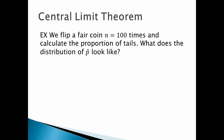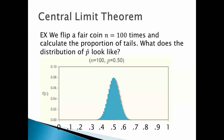We flip a fair coin n equals 100 times and calculate the proportion of tails. What does the distribution of p-hat look like? Here's what it looks like. Notice how this is different — this one tails off by the time we reach 0.3 and 0.7. With the previous one you could see it above the x-axis at 0.1 and 0.9. Here you can't see that; it isn't even visibly above the x-axis at 0.3 and 0.7, though technically it is — it's just so close to the x-axis you can't see it.